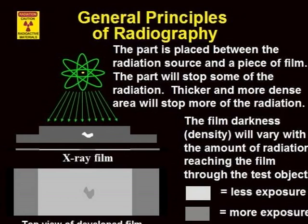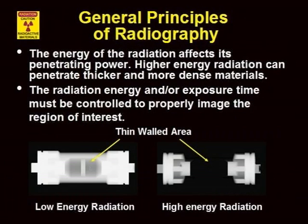Other detectors, such as image intensifiers used on real-time radiography systems, will result in the opposite condition — more radiation received will appear brighter. The energy of the radiation may be adjusted for the proper exposure. The higher the energy, the thicker or more dense the test articles may be. Much like visible light photography, the exposure time may also be varied for the proper exposure.